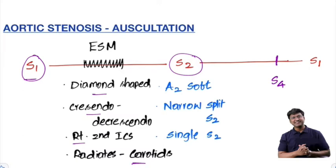How will the second heart sound be? The second heart sound has two components, A2 and P2. The A2 will be soft, and depending upon the severity of aortic stenosis, the split between A2 and P2 will decrease. So there will be a narrow split S2, and there can be a single S2 if it is severe aortic stenosis.